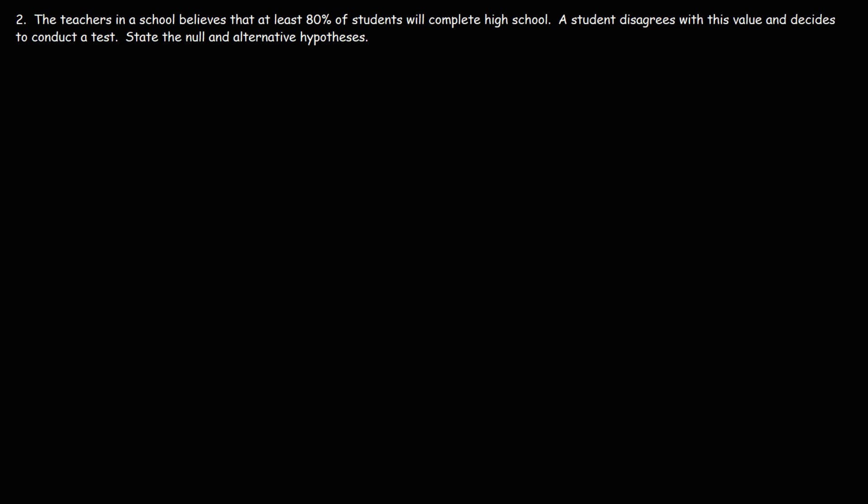Number two: the teachers in a school believe that at least 80% of students will complete high school. A student disagrees with this value and decides to conduct a test. State the null and alternative hypotheses.